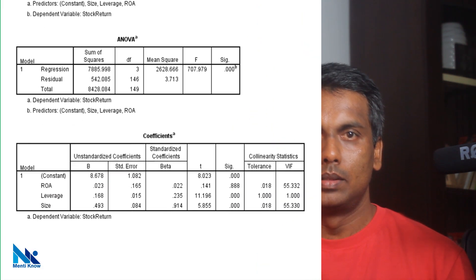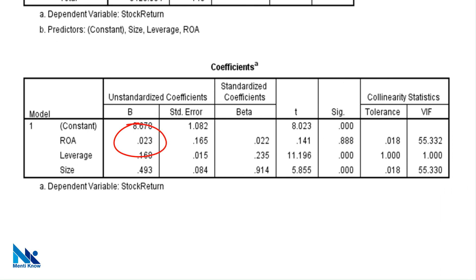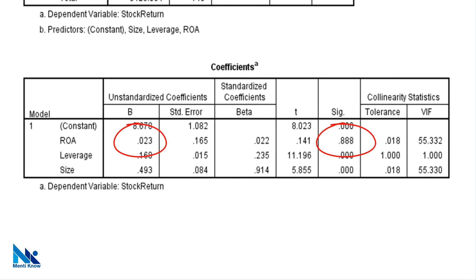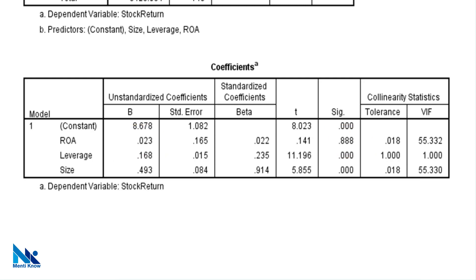And now let's remove ROE from the model and put size back into the model. Now we can see that the coefficient for ROA is almost equal to 0 and statistically not significant. This time also, small alteration in the model has caused a substantial alteration in the coefficient for ROA.